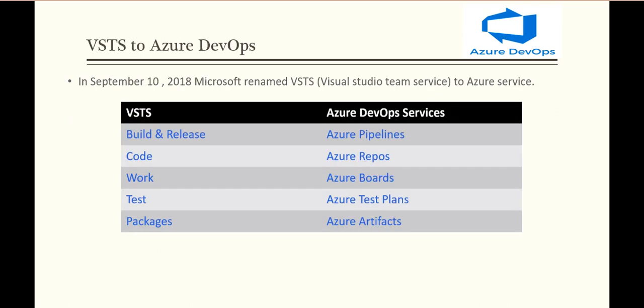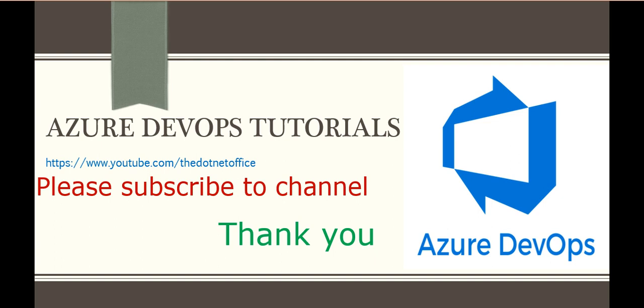Microsoft renamed VSTS to Azure DevOps on September 10, 2018. Along with the renaming, the individual components were also renamed. What was previously called Build and Release is now Azure Pipelines. Code is now called Azure Repos. Work is now Azure Boards. Test is now Azure Test Plans. And Packages is now Azure Artifacts. These services and their responsibilities were explained earlier, and that's it for this tutorial — if you have any questions, please comment.